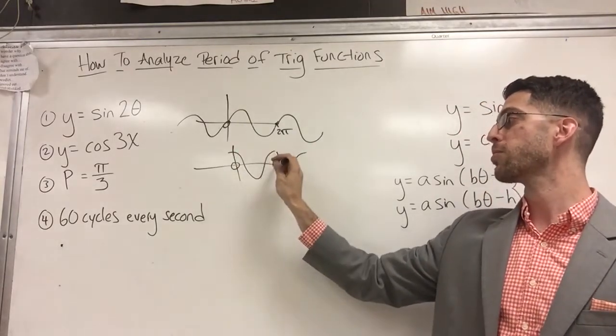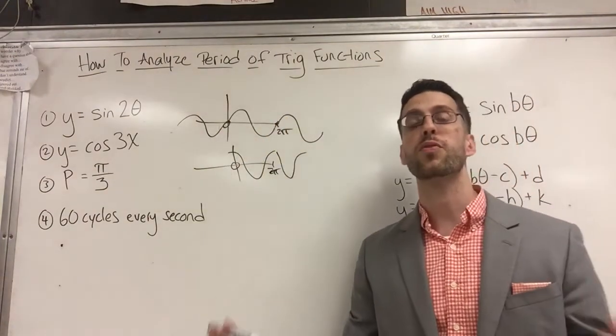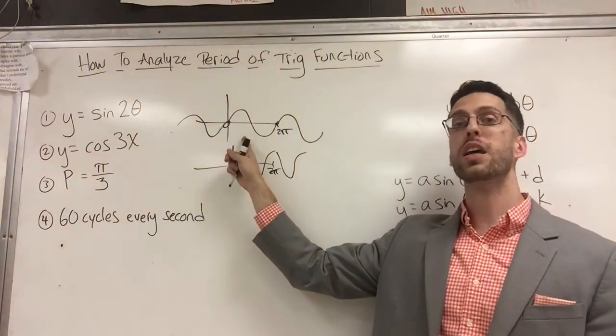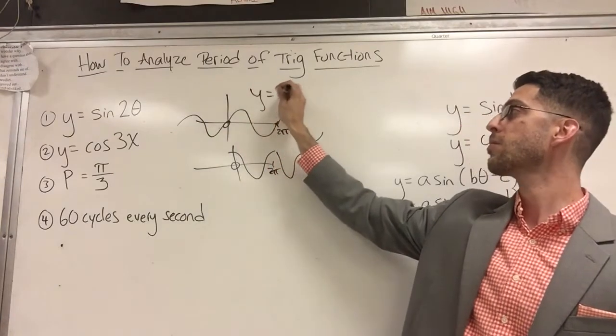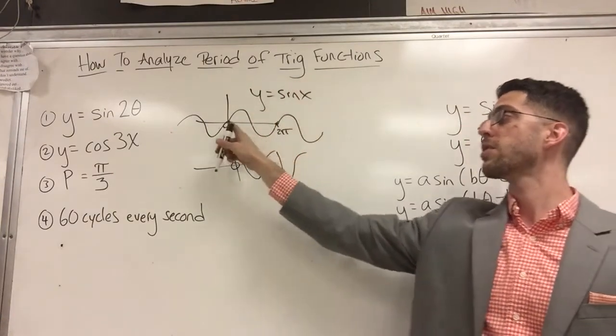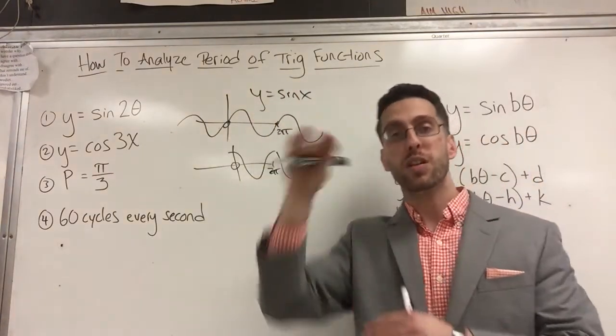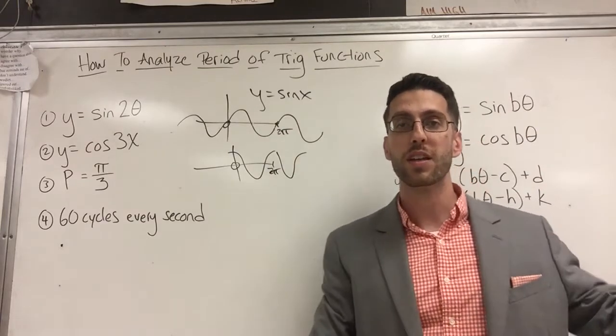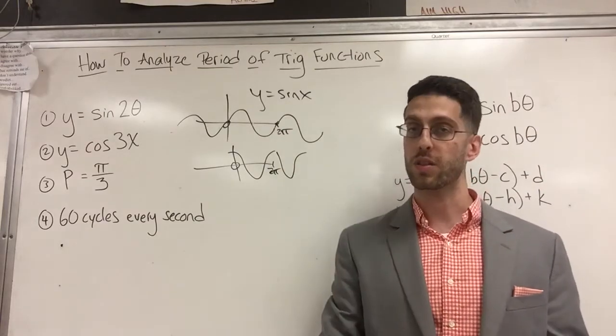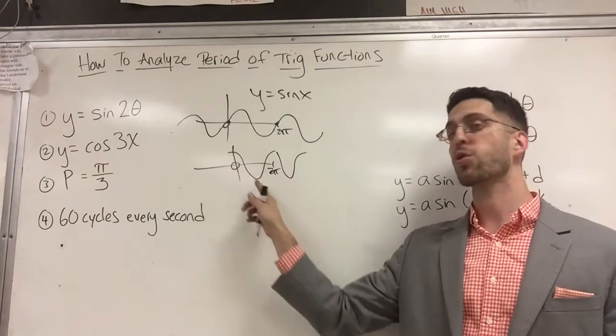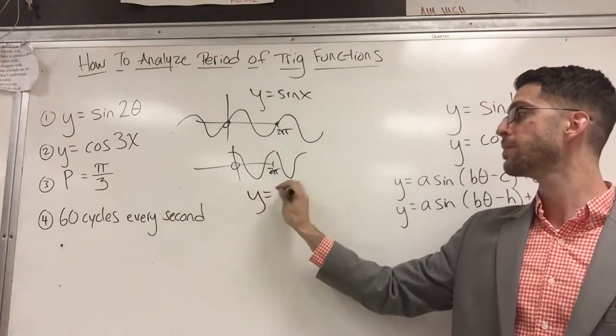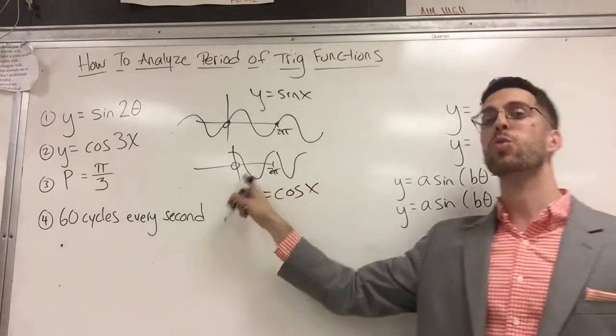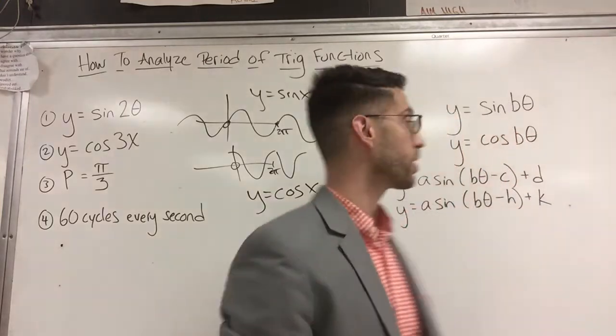The default goes from zero to two pi, so the period of the default graph of y equals sine x is two pi. How long does it take to complete a full cycle, a full wave? That is two pi units. How long does it take to complete a full cosine? Also two pi units. So the default period is two pi units.